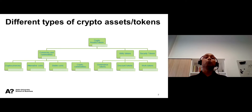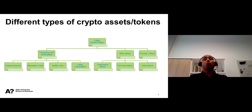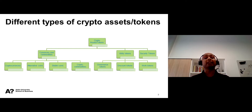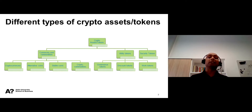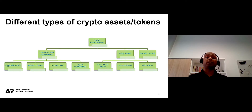Coming to utility tokens: utility tokens are a kind of user token. These are tokens that are given out during crowd sales as a project executes an ICO or initial coin offering. When a firm creates a utility token, it means that it is creating a form of digital coupon that can be redeemed in the future for discounted fees or special access to a product or service.